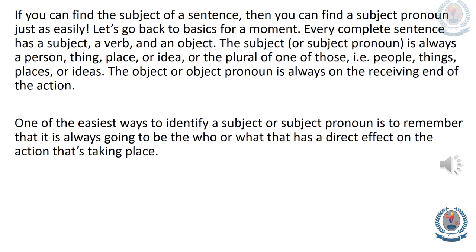If you can find the subject of a sentence, then you can find a subject pronoun just as easily. Every complete sentence has a subject, a verb, and an object. The subject or subject pronoun is always a person, thing, place, or idea, or the plural of one of those — that is, people, things, places, or ideas. The object or object pronoun is always on the receiving end of the action. One of the easiest ways to identify a subject pronoun is to remember that it is always going to be the who or what that has a direct effect on the action taking place.